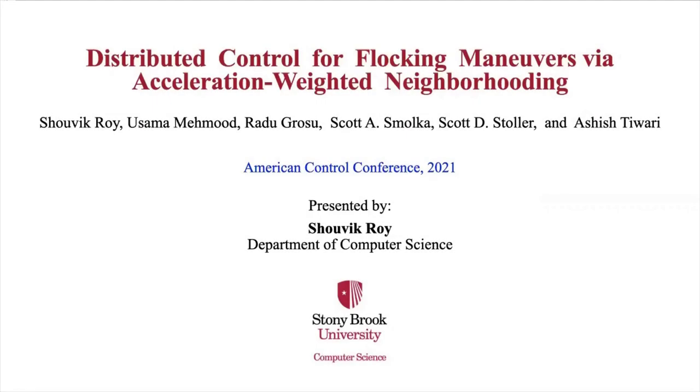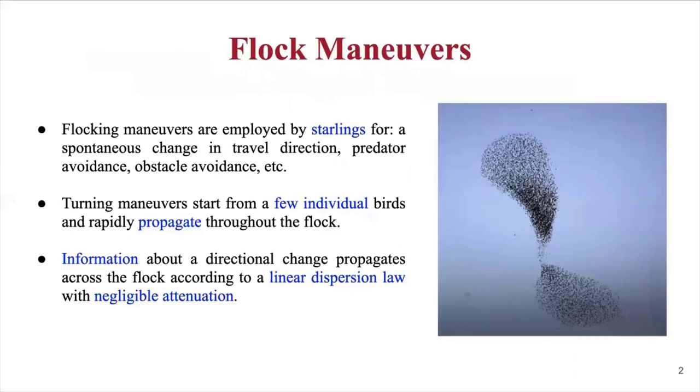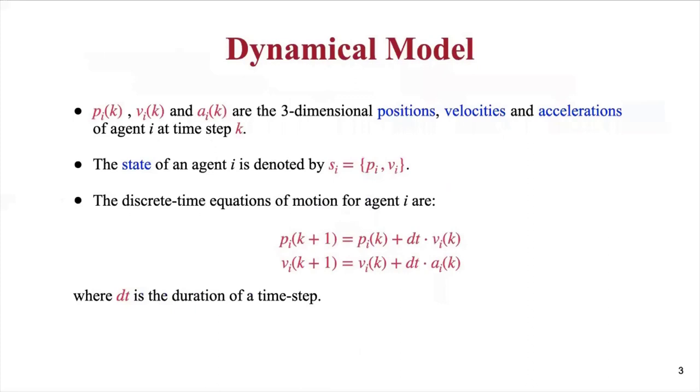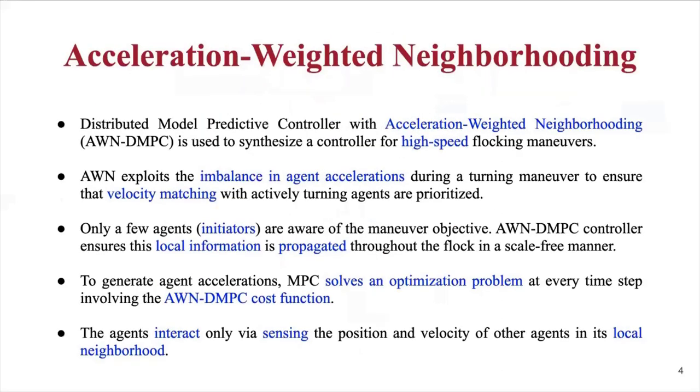My name is Shashi Kaul. Today, I'll be presenting our group's work titled distributed control for flocking maneuvers via acceleration-weighted neighboring. In this work, we show the designing of distributed controllers capable of flocking and various flight maneuvers. Flocking and maneuvering are commonly observed in nature and have been modeled for robot swarms, drones, etc. for various tasks such as surveillance, herding and foraging. Here is our dynamical model for our multi-agent system, where p, v, and a are the position, velocity, and acceleration of an agent. The novelty in our work is the acceleration-weighted neighboring, or AWN.